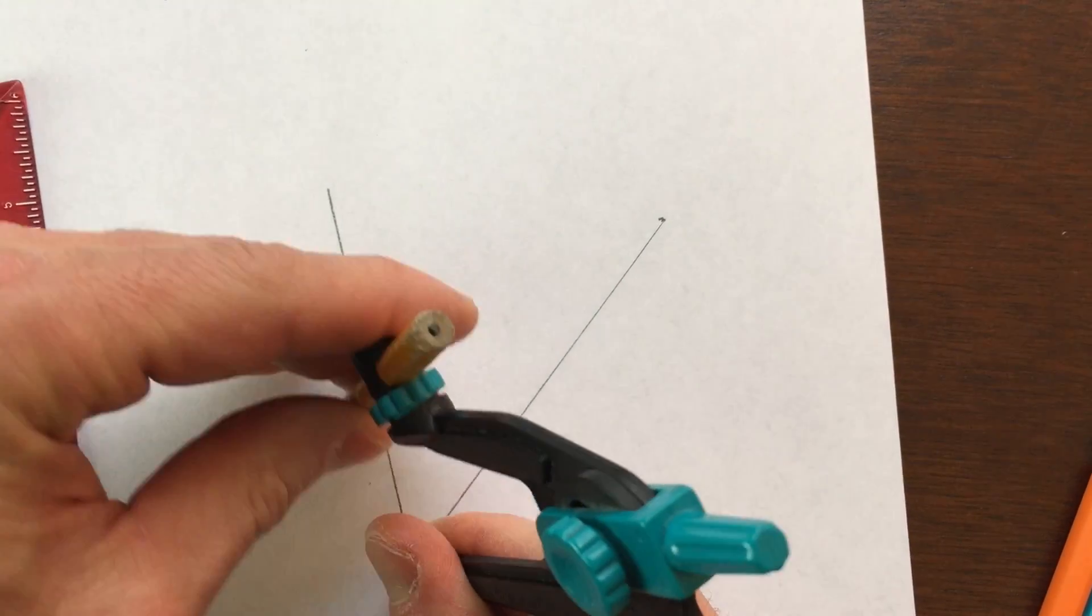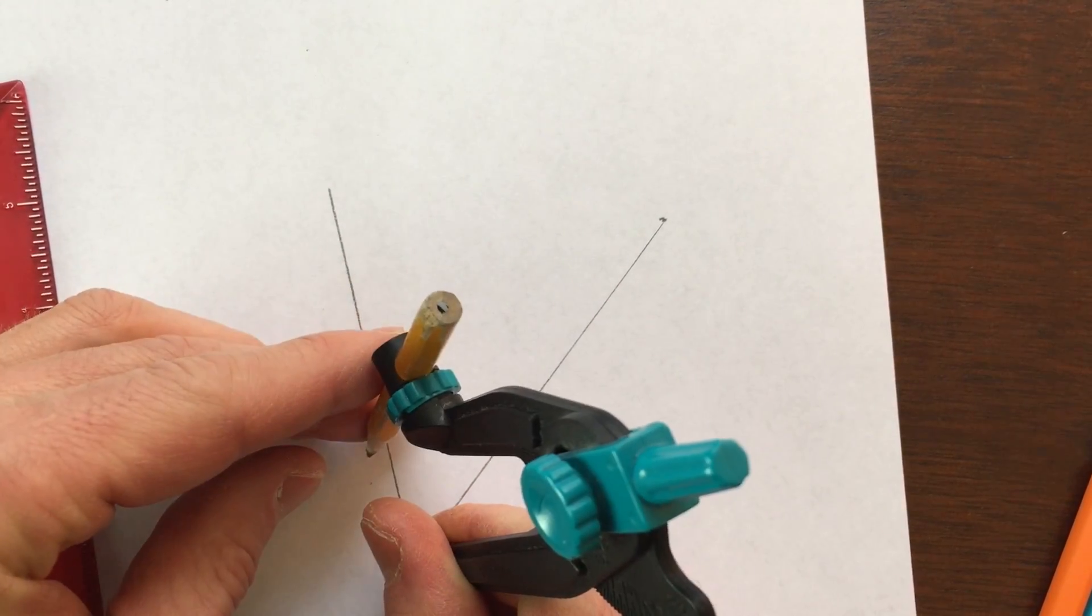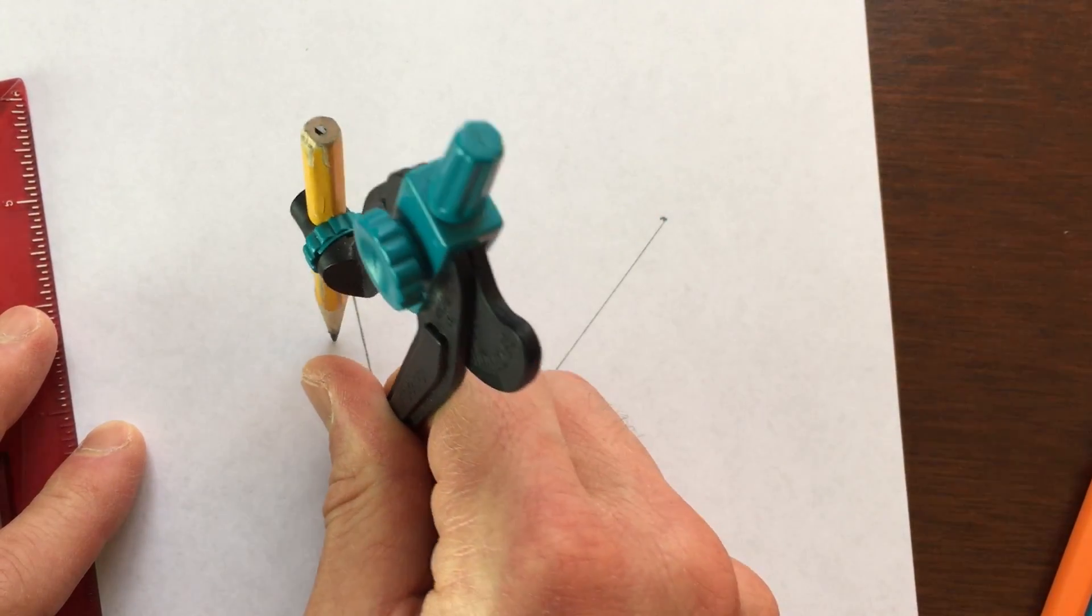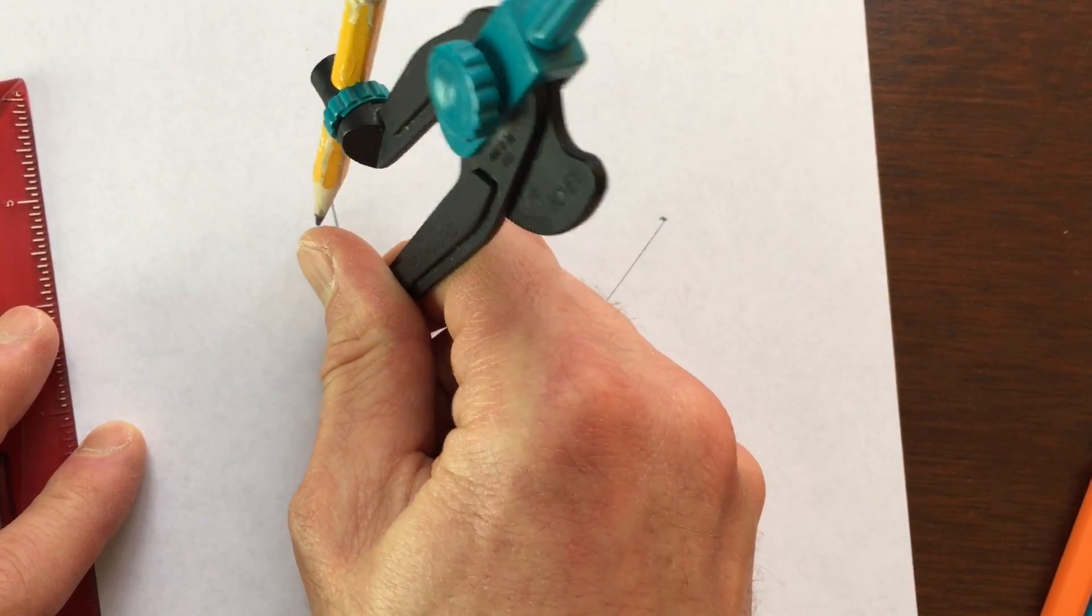I'm going to go ahead and open up the compass. And we're going to draw three arcs along this ray. So one, two, three.